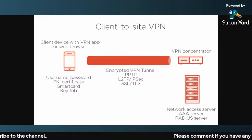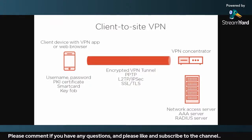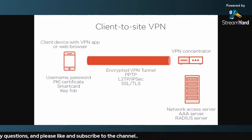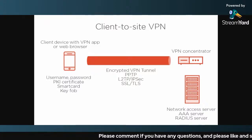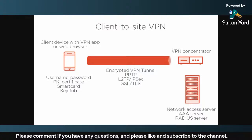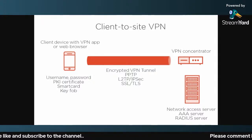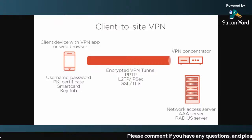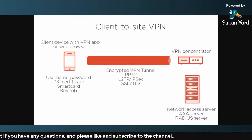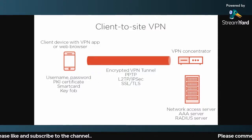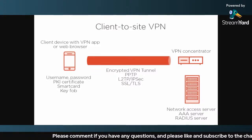In a client-side VPN scenario the process is almost the same. You connect through a VPN device using an encrypted VPN tunnel. Different protocols can be used for VPN encryption: PPTP, L2TP, IPsec, SSL, and TLS. After the traffic lands on the VPN concentrator, it goes to the RADIUS/AAA server, which checks whether the user has access and provides it accordingly. If you have any questions, feel free to ask in the comment section — thank you for watching.